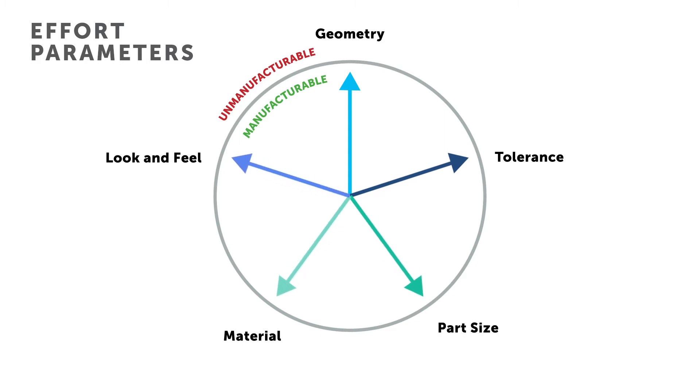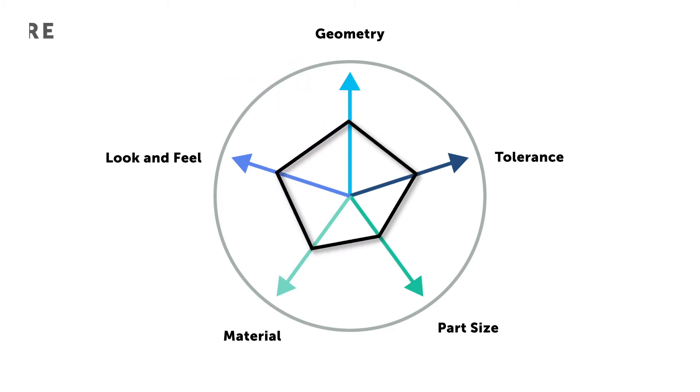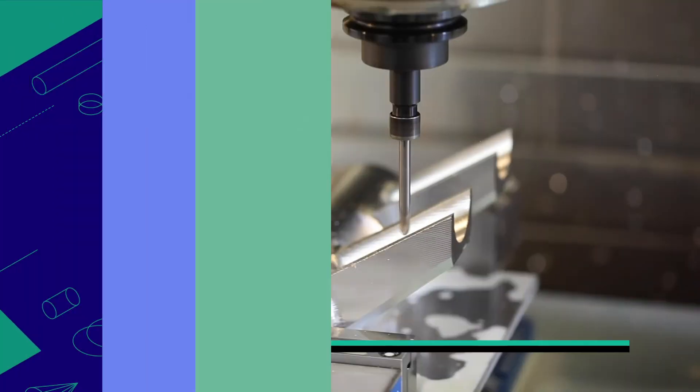Going back to our examples of an aerospace part and a test fixture, we can map the design parameters onto their respective effort axes and see the relative effort. The aerospace part maps to high effort across all parameters and the test fixture maps to low effort.